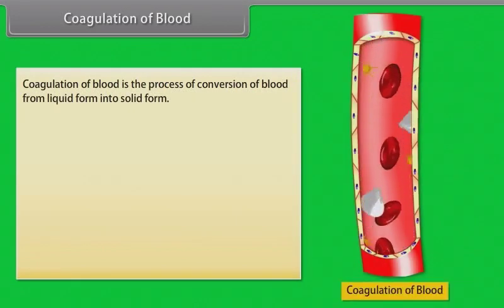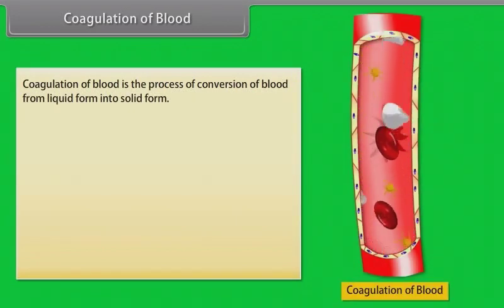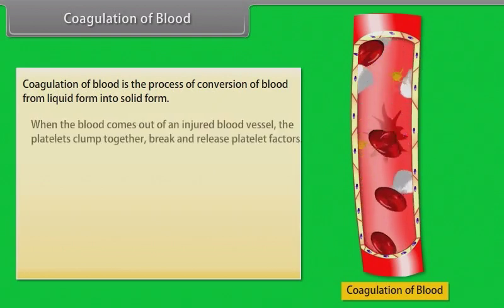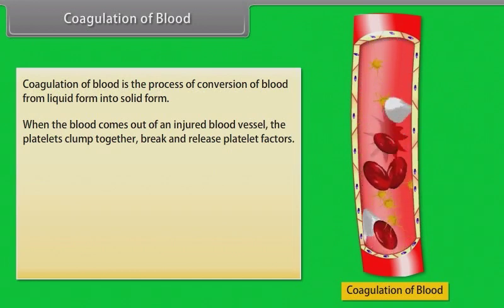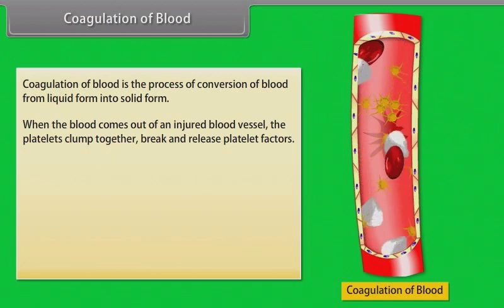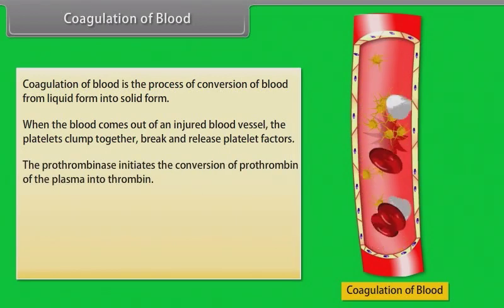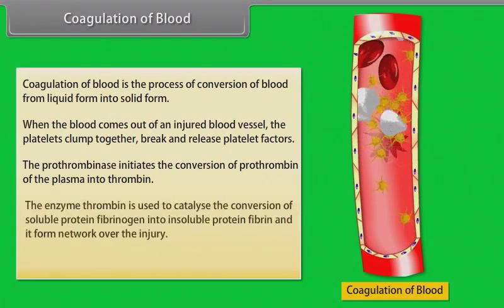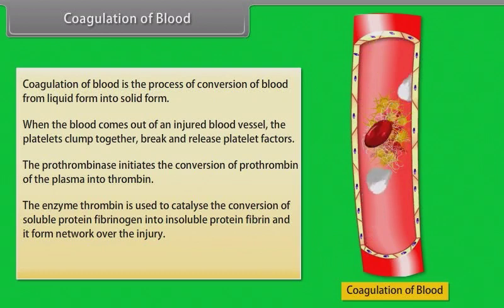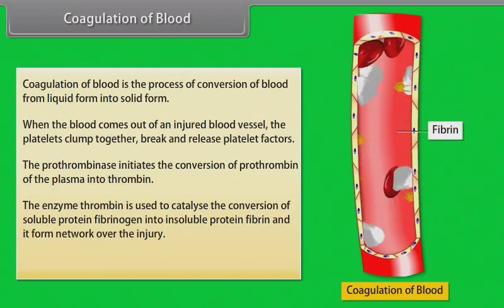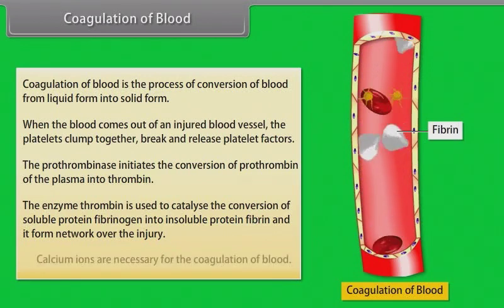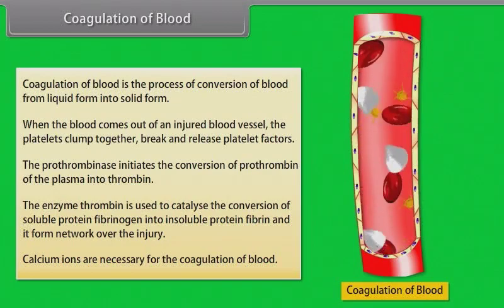Coagulation of blood is the process of conversion of blood from liquid form into solid form. When blood comes out of an injured blood vessel, the platelets clump together, break, and release platelet factors. Prothrombinase initiates the conversion of prothrombin in the plasma into thrombin. The enzyme thrombin catalyzes the conversion of soluble protein fibrinogen into insoluble protein fibrin, forming a network over the injury. Calcium ions are necessary for the coagulation of blood.